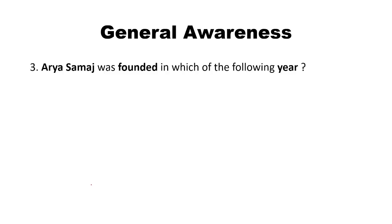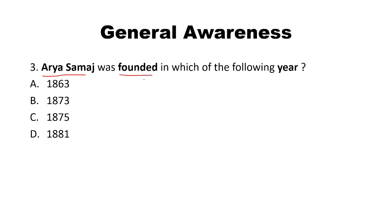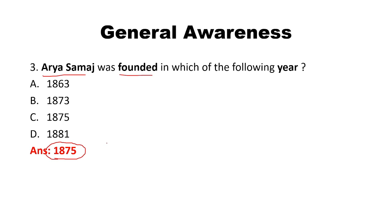Arya Samaj was founded in which of the following year? The answer is 1875. In the year 1875, Arya Samaj was founded. The founder was Swami Dayananda Saraswati. Swami Dayananda Saraswati was the founder of Arya Samaj in the year 1875.